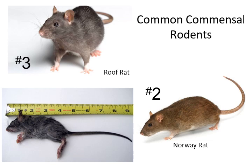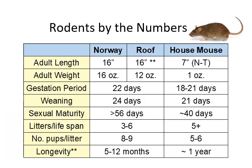Another key difference between the Norway rat and the roof rat is tail length. If you take the roof rat's tail and pull it toward its head, it will reach past or nearly past the head. The Norway rat's tail is much shorter than that — those are pretty easy ways to tell them apart.